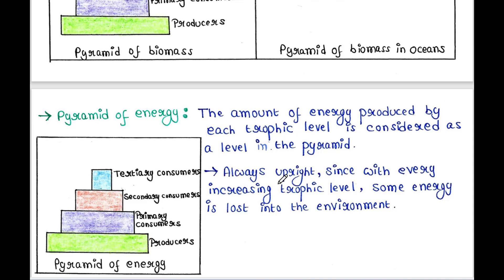This type of pyramid is always upright. Since with every increasing trophic level some energy is lost into the environment, producers produce maximum energy. Some amount of energy is lost into the environment and the rest is passed to primary consumers, who always have less energy compared to producers. Again, when secondary consumers get energy from primary consumers, some energy is lost, so secondary consumers have less energy than primary consumers.